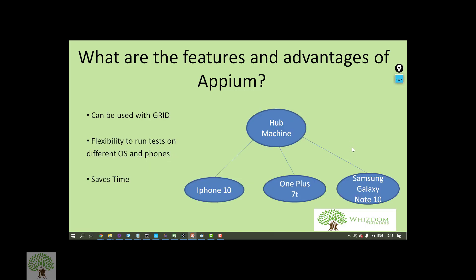Appium can be used with grid, which is a very good feature. In grid, you can have a single machine and connect multiple phones to it. When you connect multiple phones, you can run scripts in parallel. This saves time, and it also gives you the flexibility to run tests on different operating systems, phones, and different versions of Android. This is a very important advantage of Appium.